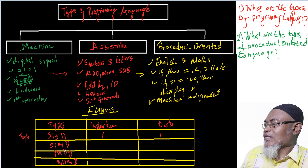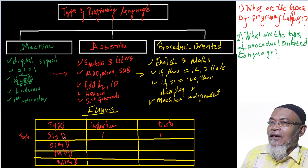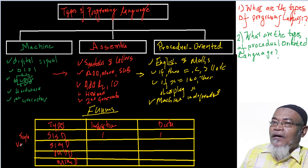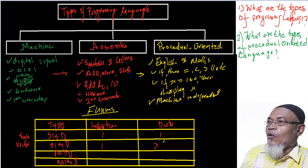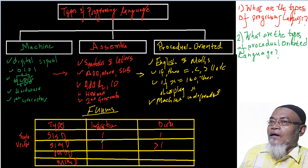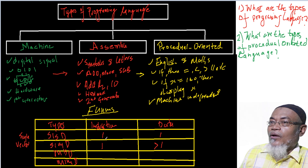The second type is SIMD, which stands for Single Instruction, Multiple Data. An example is a vector CPU machine, which operates on one instruction but more than one data stream. This can be found on modern computers in features like SSE, MMX, or multimedia operations.